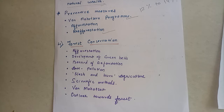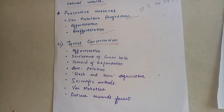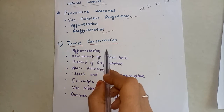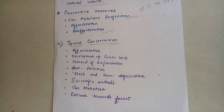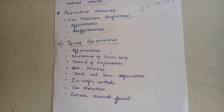Some steps that have been taken to sustain forest resources are afforestation. Afforestation means planting trees. Planting trees along the road, railway line, and river banks. Also, development of green belts in the urban areas.